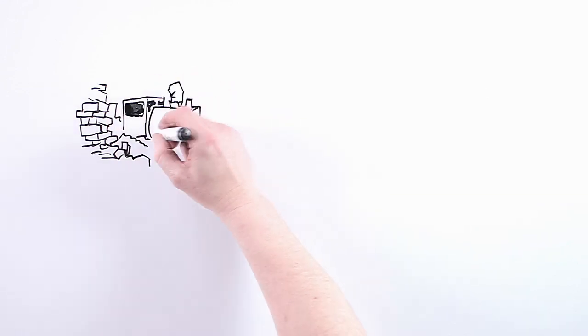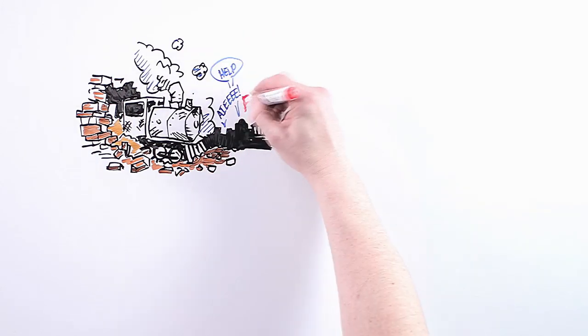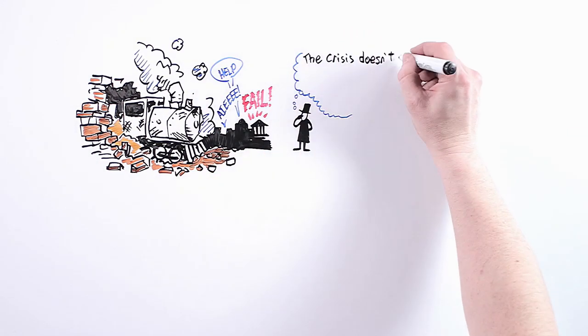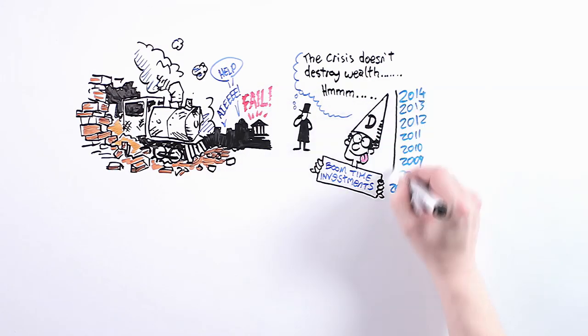Following the Great Irish Railway share crash of the 1850s, the wonderful English economist John Stuart Mill observed that the crisis doesn't destroy wealth. It merely evidences the extent to which wealth has already been destroyed by stupid investments made in the boom.